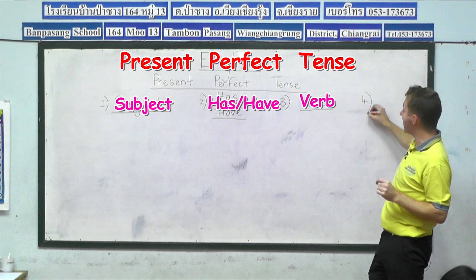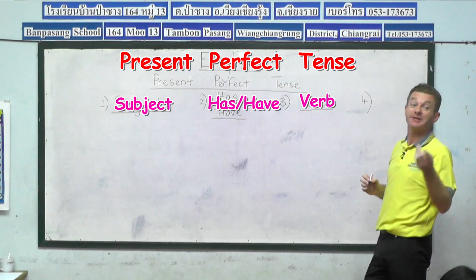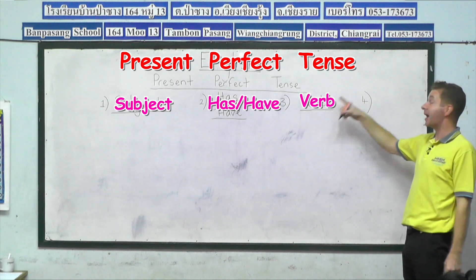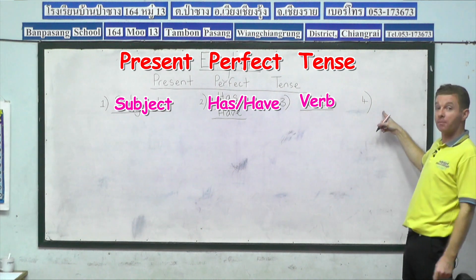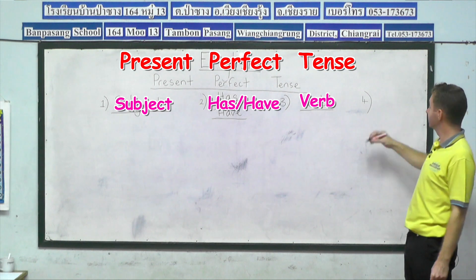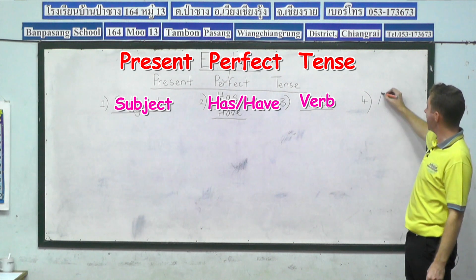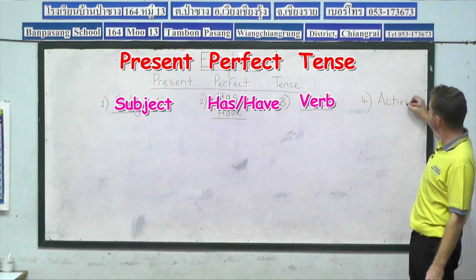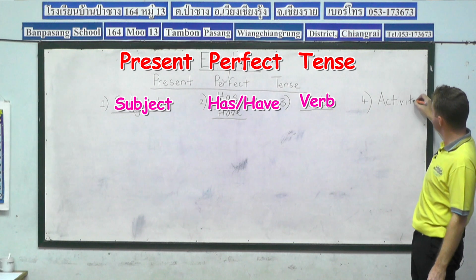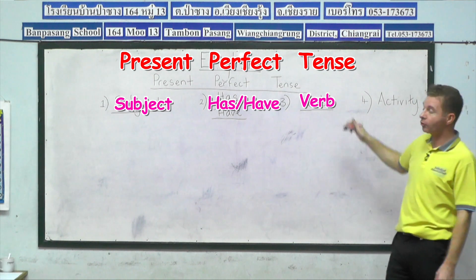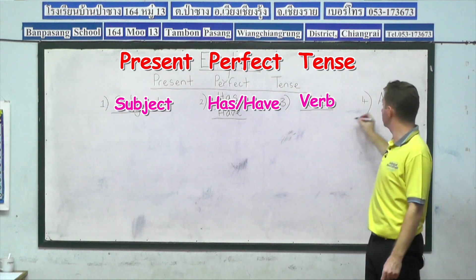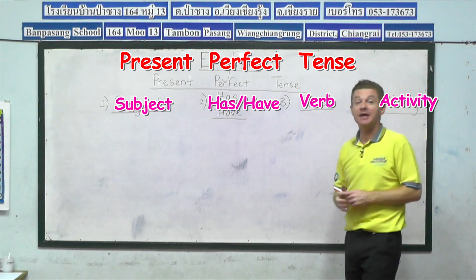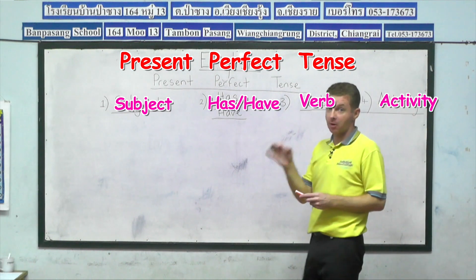We need to use the past tense form of the verb to talk correctly in the present perfect tense. And then after the verb, the activity. We talk about the verb and then we use the complement or the activity — A-C-T-I-V-I-T-Y. These are the four groups of words we use to construct sentences in the present perfect tense.